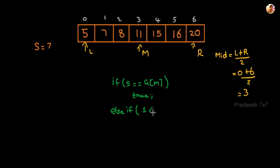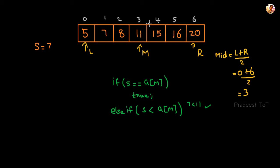Since 7 is less than 11, meaning our target is less than A[M], we know the target must be on the left half of the array. So we search in the left portion.